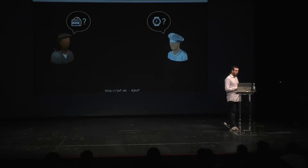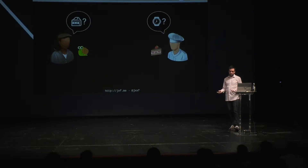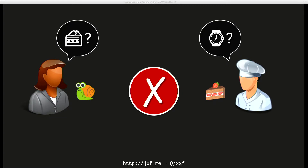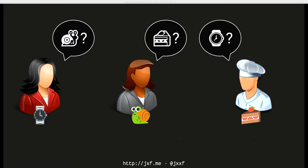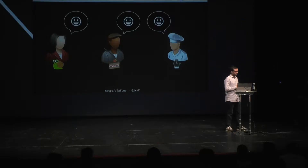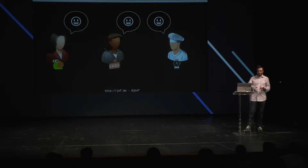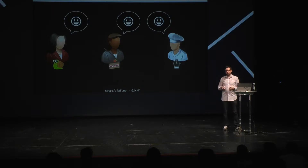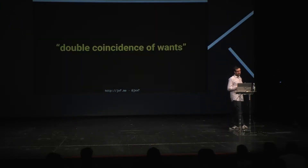What would a failed transaction look like? Bob still wants that watch, but Alice doesn't have one — she only has her pet snail — so a transaction will not occur. One way to fix a failed transaction is to introduce a third party, Carol, who has what Bob wants and wants what Alice has. We can intermediate between the two parties by introducing this third party, but notice that this is just a coincidence.